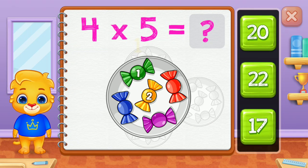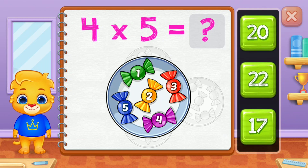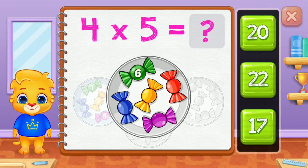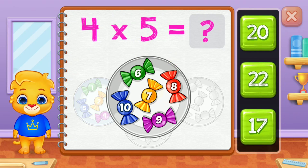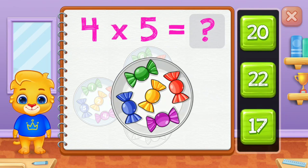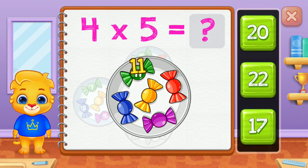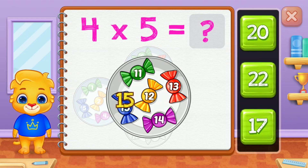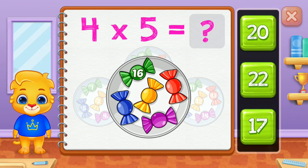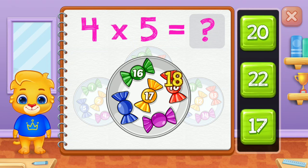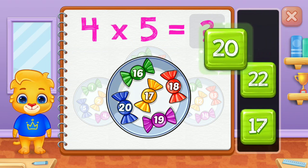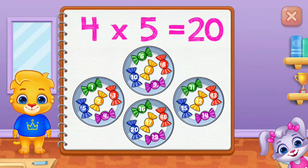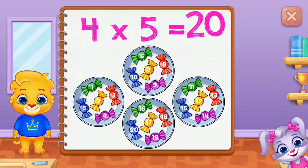1, 2, 3, 4, 5, 6, 7, 8, 9, 10, 11, 12, 13, 14, 15, 16, 17, 18, 19, 20. 4 groups of 5 equals 20.